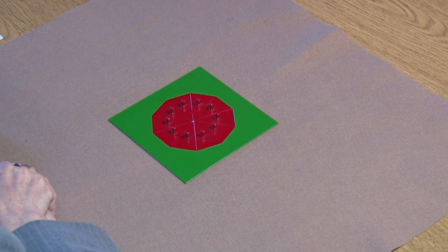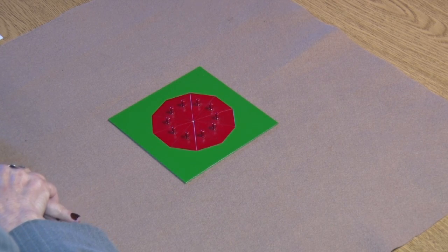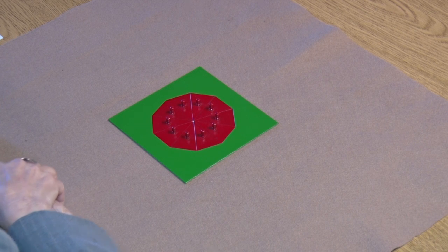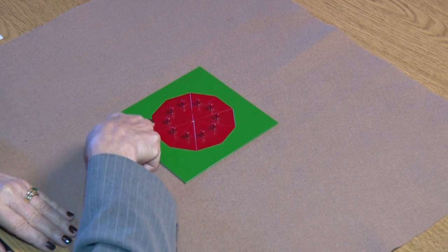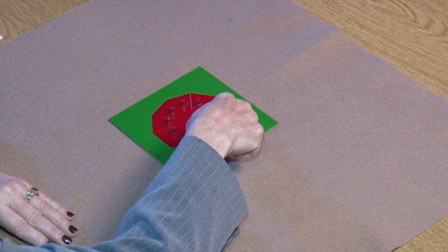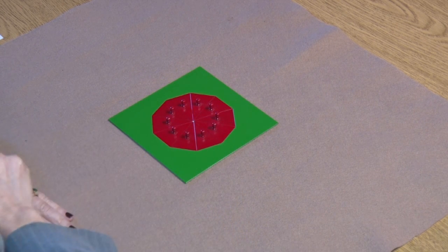This is the relationship of the apothem to the side of a regular polygon. This is a regular polygon. It has ten sides, so the name for this regular polygon is a decagon.